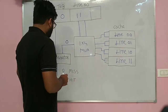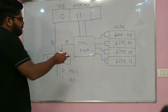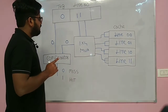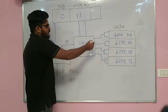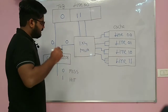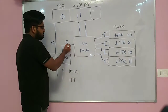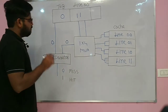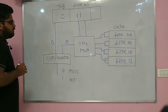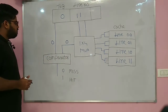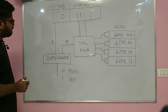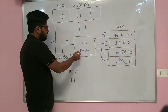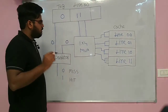Always remember: mux can only transfer 1 bit — 1 tag bit only. It cannot transfer 2 tag bits; it has only 1 output, so it can transfer only 1 bit. For the comparator, no problem — if we have 3 bits, we can use a 3-bit comparator. But for mux, we can only use 1-bit mux.